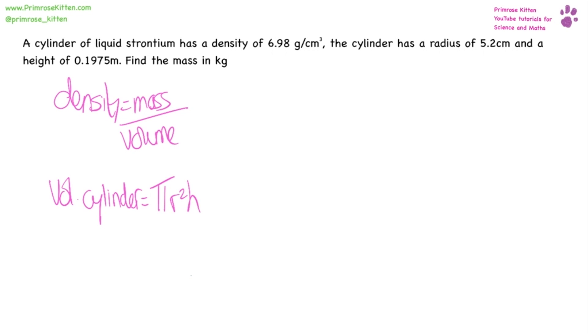So first of all, let us work out the volume of the cylinder because you'll notice that we have the density and we need to find the mass, and the only thing we're missing for this is the volume. So let's work out the volume of our cylinder.